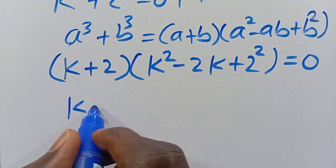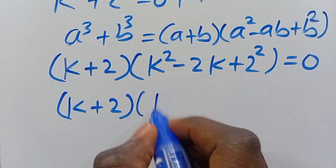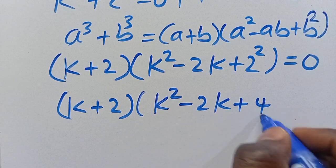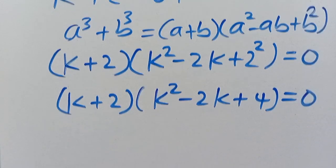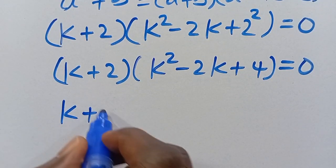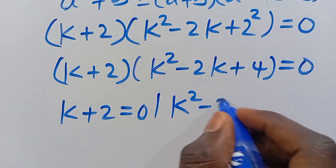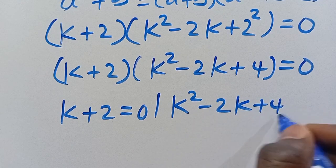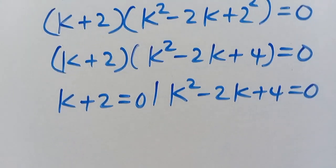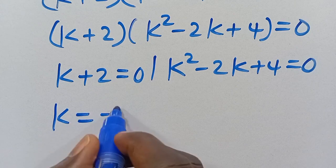So here we have k plus 2 multiplied by k squared minus 2k plus 4, everything equals 0. From here we have k plus 2 equals 0, or k squared minus 2k plus 4 equals 0. So the first solution will be k equals minus 2.